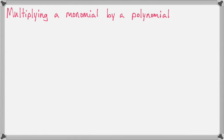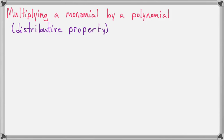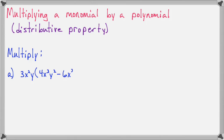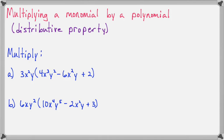Now let's multiply a monomial times a polynomial. This is going to feel like the distributive property. Here are a couple of examples for us to work on. So we're simply distributing 3x squared y to these three terms.